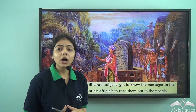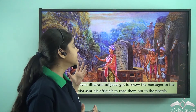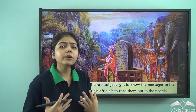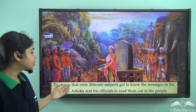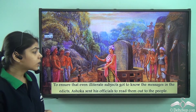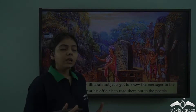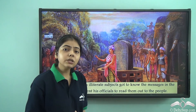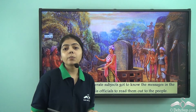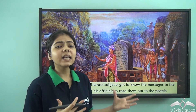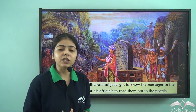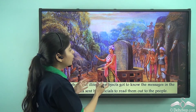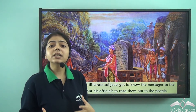People who knew how to read and write could understand the messages inscribed on the rocks and pillars. But for illiterate subjects, Ashoka sent officials to read out his messages to the masses who did not know how to read or write. It is similar to how during political rallies today, parties use vehicles with loudspeakers to propagate messages to the common public.